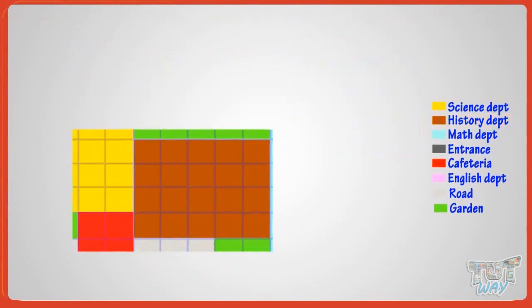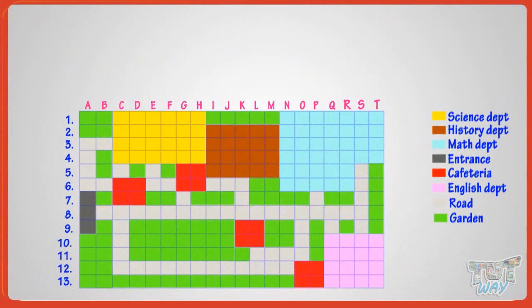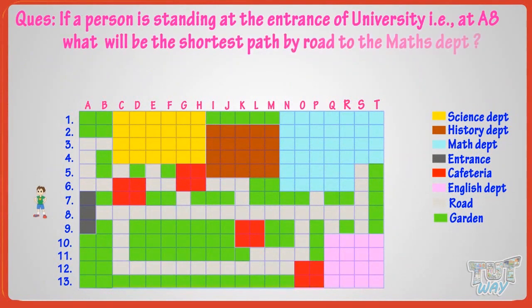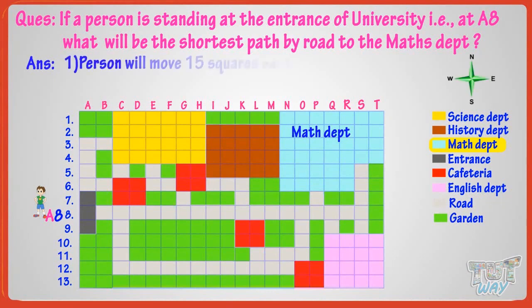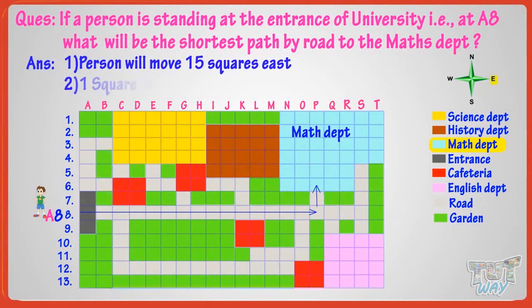Now, let's move on to next question. If a person is standing at the entrance of university, that is at A8, what will be the shortest path by road to the math department? Let's find it out. A person will move 15 squares east, and then 1 square north, and will reach the math department.